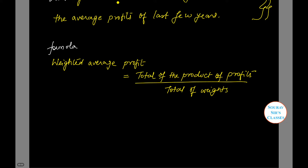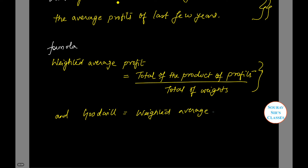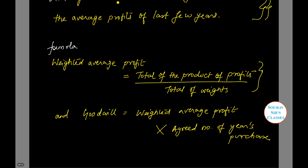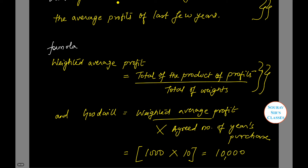Having established the weighted average profit, goodwill is calculated as: goodwill equals weighted average profit multiplied by the agreed number of years of purchase. For example, if the weighted average profit is $1,000 and the agreed number of years of purchase is 10, then the valuation of goodwill becomes $10,000 using this method.